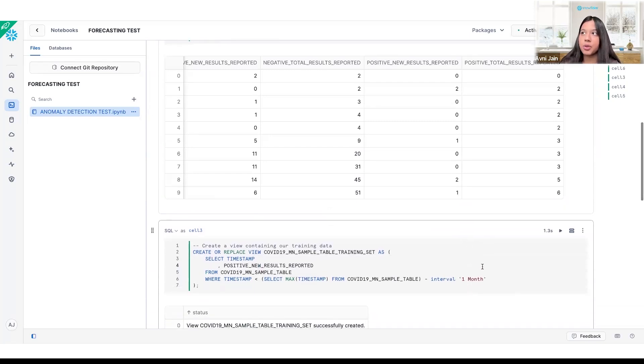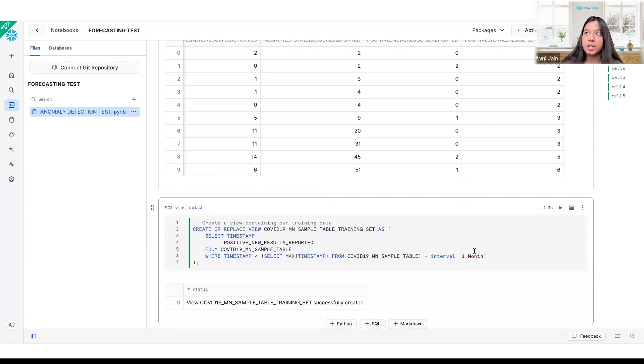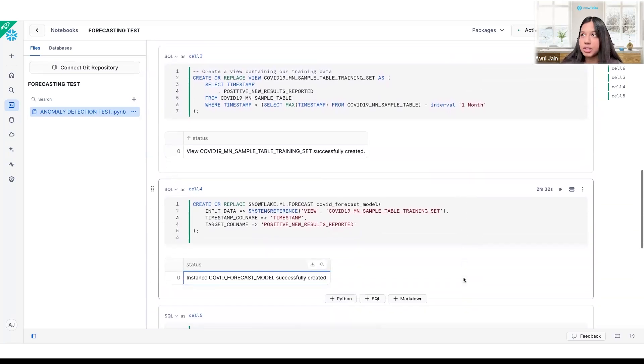For this first, you're going to create your training dataset. I've selected the timestamp column as well as the positive new results reported column to do the forecast on. You also want to make sure that it is ordered in ascending order for timestamp because that's really crucial for these time series models.